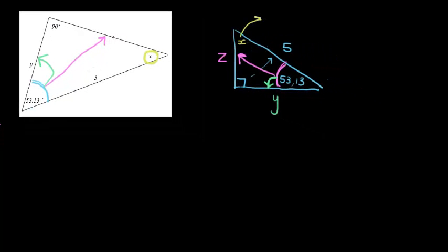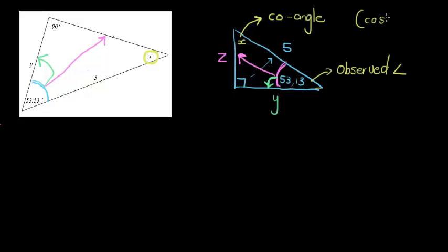Now this unknown angle, if we look at a normal right-angled triangle, this is called the observed angle, and this one is called the co-angle. And you'll later learn why we call it the co-angle. I'll just give you a little clue: cosine. It's got something to do with cosine.